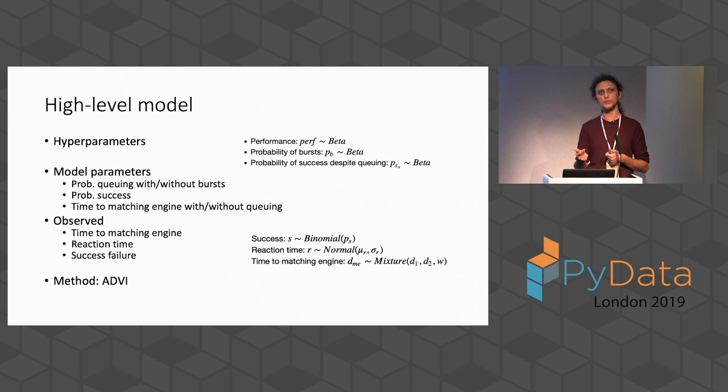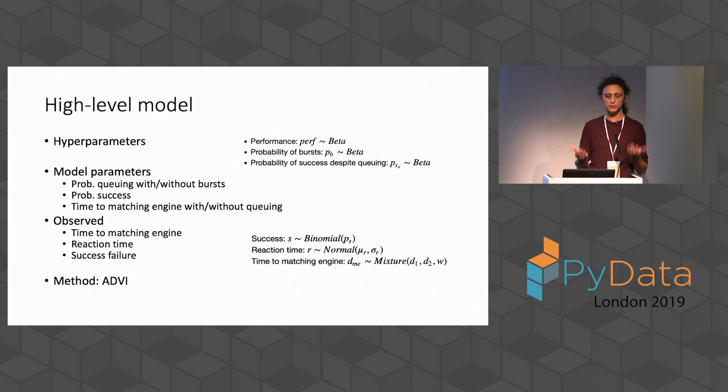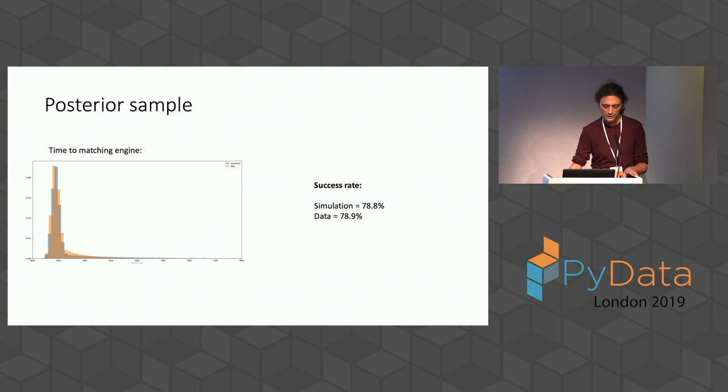These variables are related: the faster we are, the more successful we'll be and the less likely we are to queue, which means less time to the matching engine. Time to matching engine is a mixture distribution because queuing versus not queuing gives two different latency characteristics. To fit to data, I used variational inference, which worked out fine.